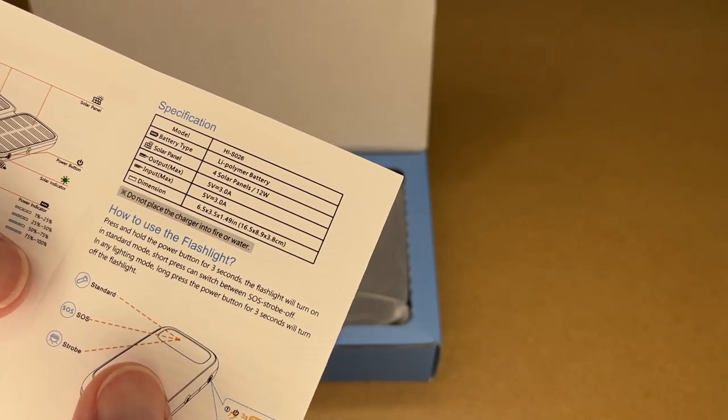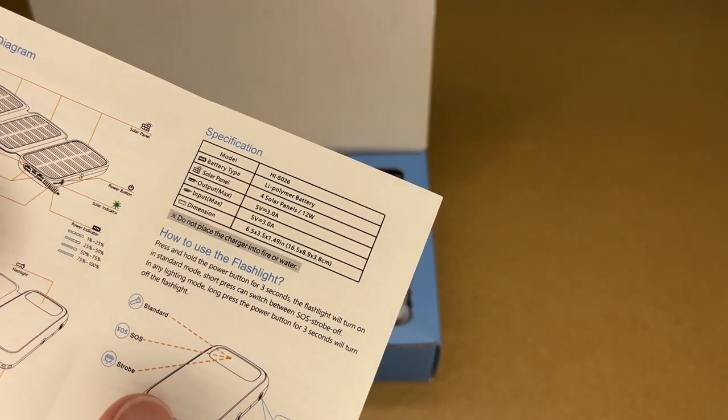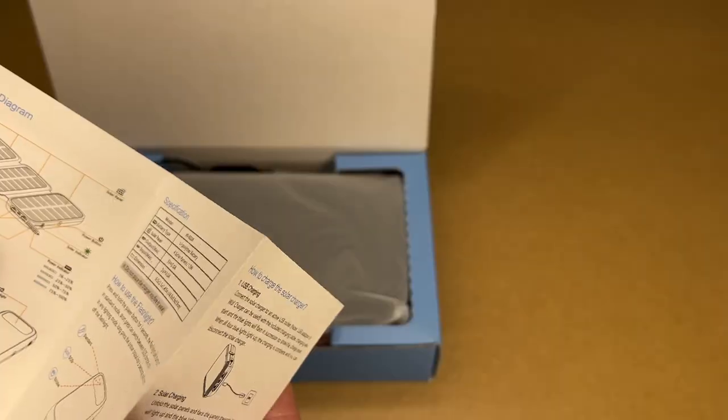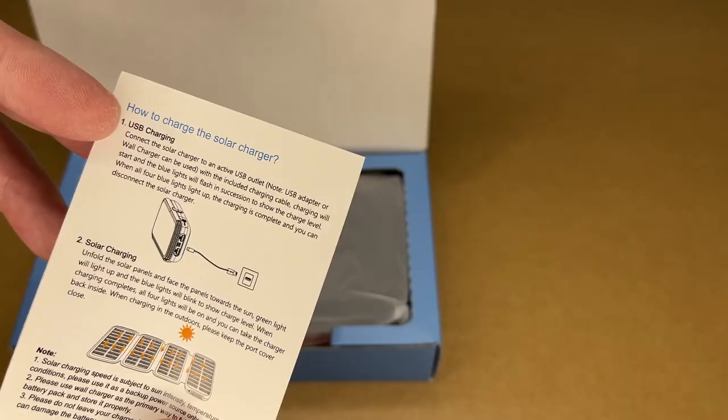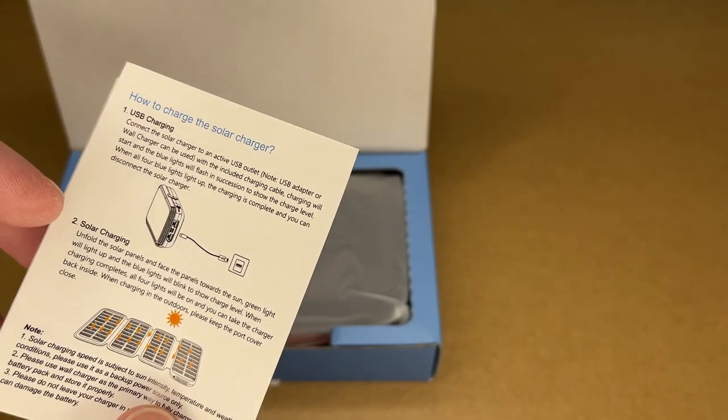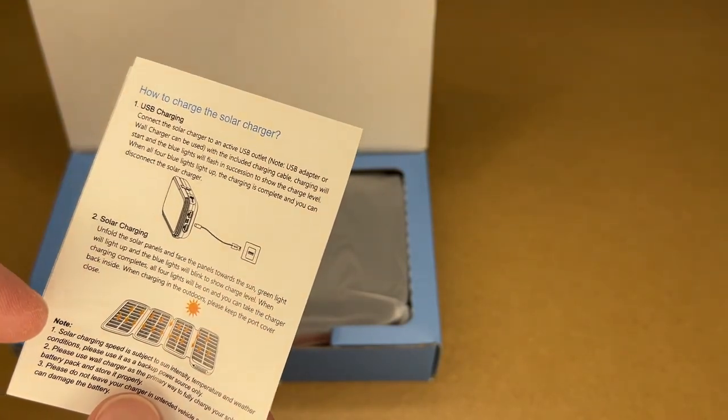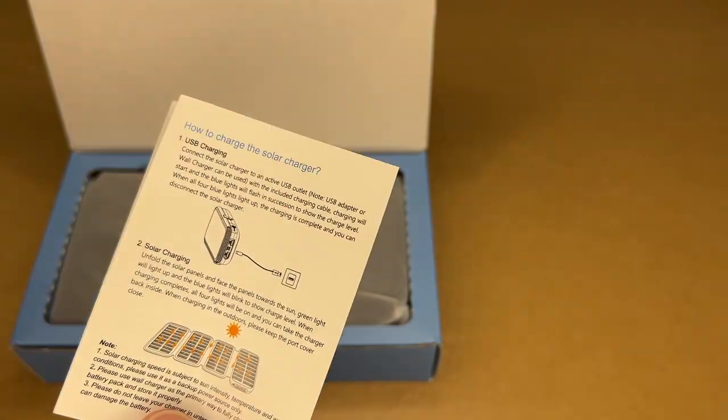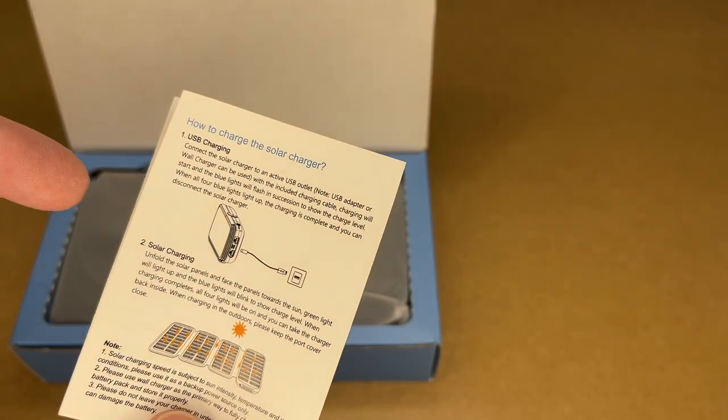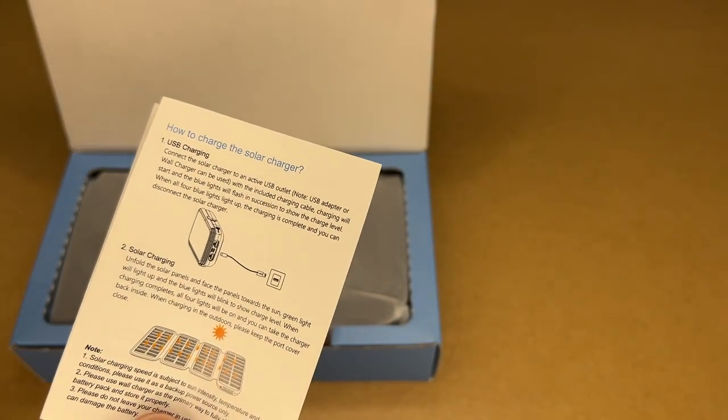To use the flashlight, you press and hold the power button for three seconds. It has three different modes: standard, SOS, and strobe, and you press the button to change between those. This can be charged with USB or with solar. Something to point out is that solar charging tends to be relatively slow. So the way to use this, if you're going on a weekend camping trip for instance, you would charge this up before you leave.